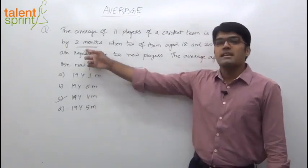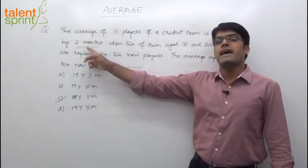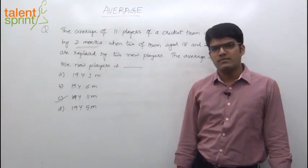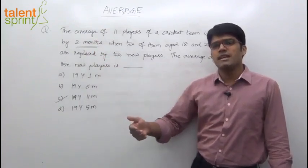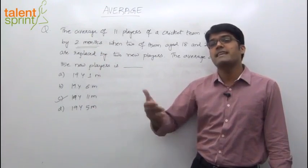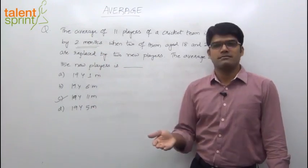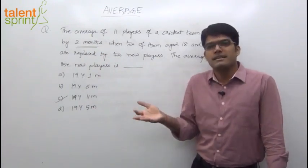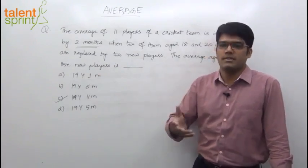So here the question says that the average of 11 players has increased by 2 months. If the average of 11 players has increased by 2 months, we can understand that each player's age has increased by 2 months. Only then the average will increase by 2 months. In terms of, at least theoretically that's how it happens.